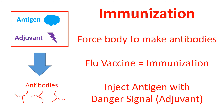Immunity can be taught to the body. Immunization is a process in which the body can be taught to produce an antibody against an antigen. For instance, the flu vaccine is a form of immunization against the flu virus. This can be achieved by injecting an antigen with a danger signal, also known as an adjuvant. Sometimes the entire microbe, instead of a single antigen from the microbe, is used. The adjuvant can be naturally part of the microbe itself, or non-organic adjuvants can be used, such as aluminum.